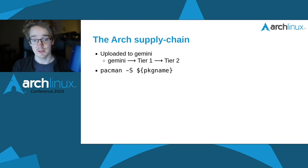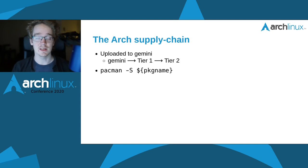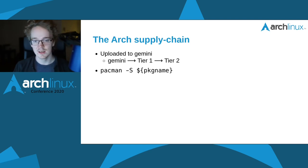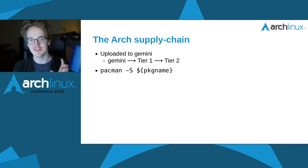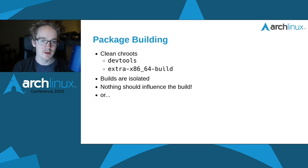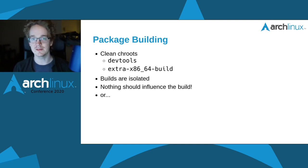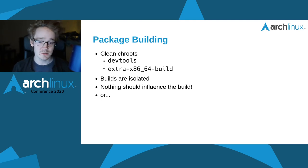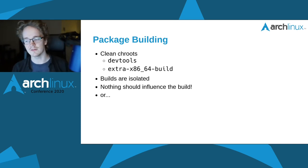Once packages have been built, we upload them to Gemini, which is our tier 0 mirror, and it's then distributed to tier 1 and tier 2 mirrors, which allows you to download packages. We generally build everything in clean chroots to have everything isolated from the main systems, ensuring we don't have dependencies or environment variables that pollute the build. In theory, nothing should affect or change the build.